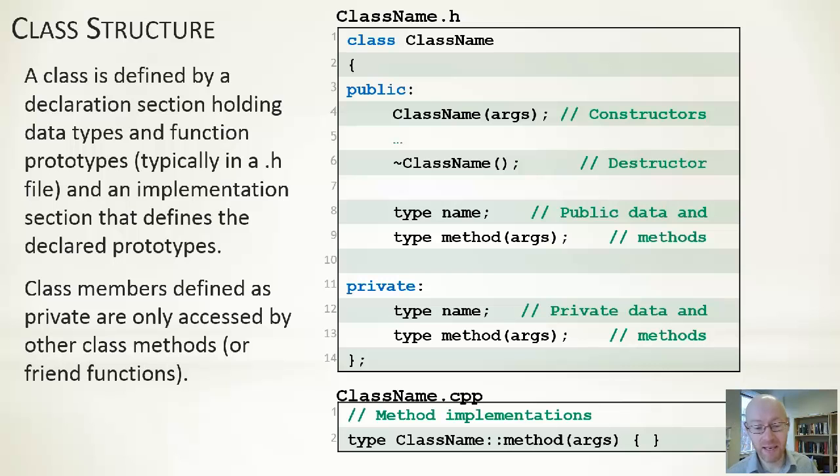Inside the cpp file down at the bottom there, for each of our methods that we've declared we want to go through, we're given the name of the class and then the rest of the signature and we're showing the implementation of that. So fairly straightforward in terms of how we can set it out.